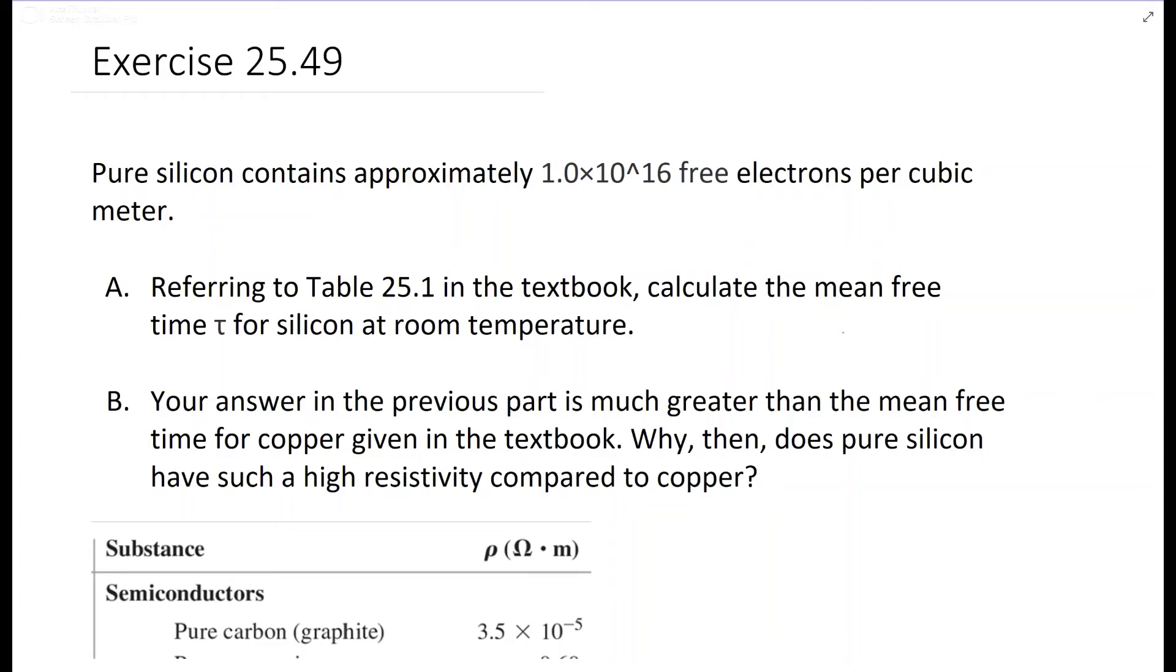This is exercise 25.49. It gives you information about pure silicon, which contains approximately 1.0 times 10 to the 16th free electrons per cubic meter. It asks you to refer to a table and calculate the mean free time for silicon at room temperature.